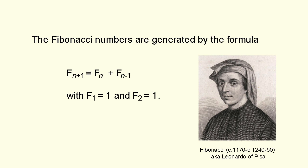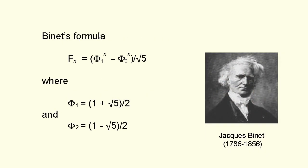Well, yes there is. There's a formula named after the French mathematician Jacques Binet who derived it in 1843 although others including Euler and de Moivre knew about it earlier. Binet's formula is F sub n equals phi 1 to the n minus phi 2 to the n all over root 5 where phi 1 the so-called golden mean is 1 plus root 5 over 2 and phi 2 is 1 minus root 5 over 2.